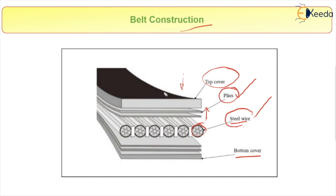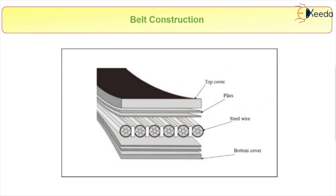On the top cover we have a particular friction material so that whatever material is placed on it will move smoothly and be conveyed properly. This is regarding the belt construction.